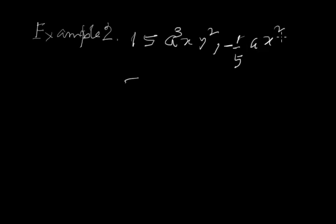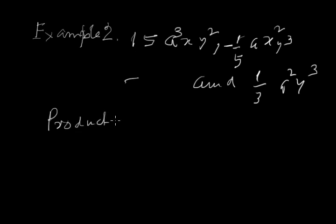15a³xy² and -1/5 xy³ and 1/3 a²y². Now there are three terms here. So product equals to, first see the coefficient, here is 15, so write 15, then minus 1 by 5, and then 1 by 3, put inside the bracket.